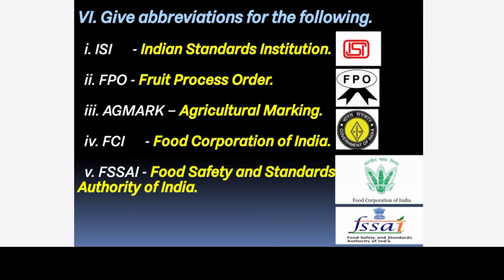6th section: Give abbreviations for the following food quality control agencies. 1st: ISI — Indian Standards Institution. 2nd: FPO — Fruit Products Order. 3rd: AGMARK — Agriculture Marking. 4th: FCI — Food Corporation of India. 5th: FSSAI — Food Safety and Standards Authority of India.